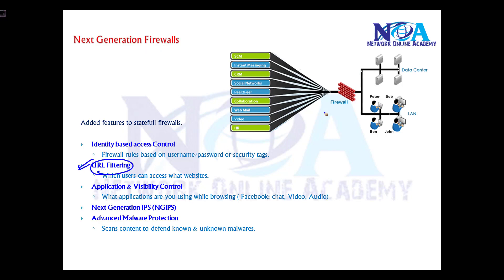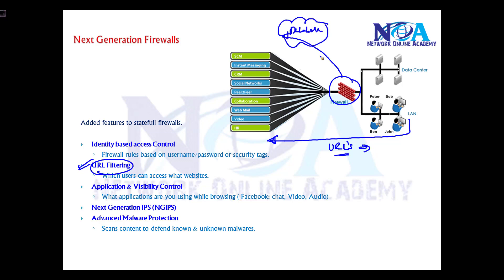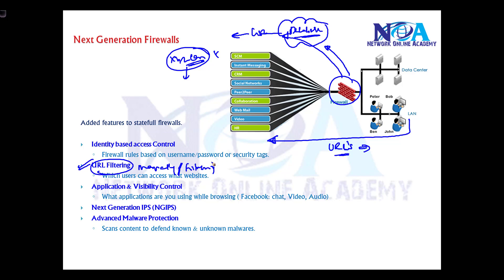One such feature is URL filtering, where traffic going from LAN to the internet can be filtered based on specific URLs. Some firewalls have a database on the cloud or on the network with a predefined list of URLs based on reputation — for example, a website like xyz.com flagged as malicious will have its traffic automatically filtered. This can be done manually or dynamically using a vendor's predefined category of URLs.